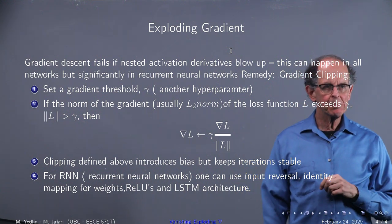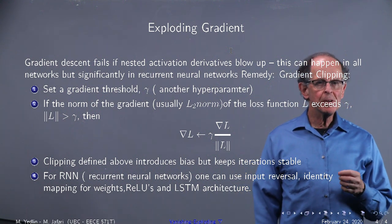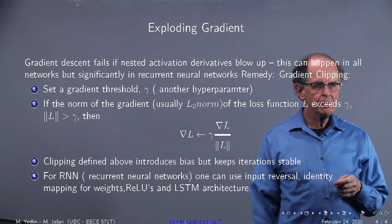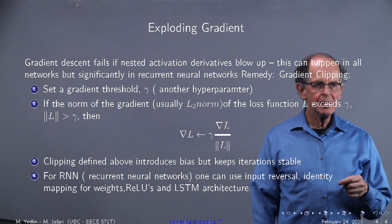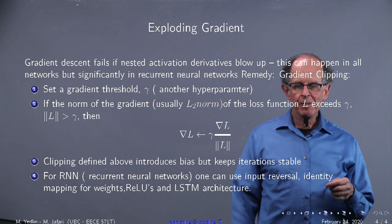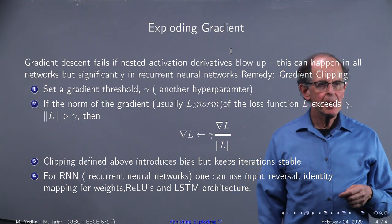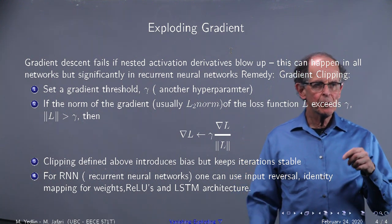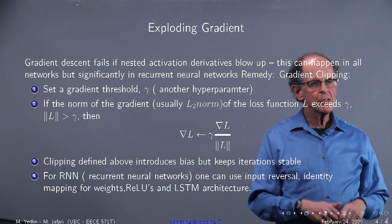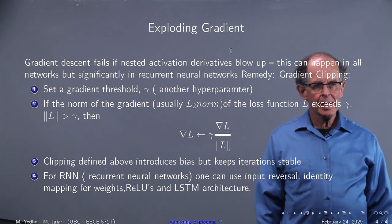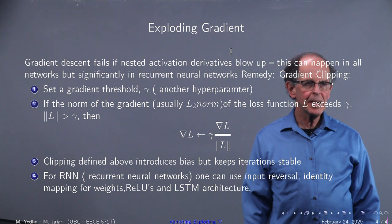If the norm of the gradient, usually it's L2, is too big, then what you do is you divide by the magnitude and then replace, as you can see there, the gradient by gamma times the unit vector.